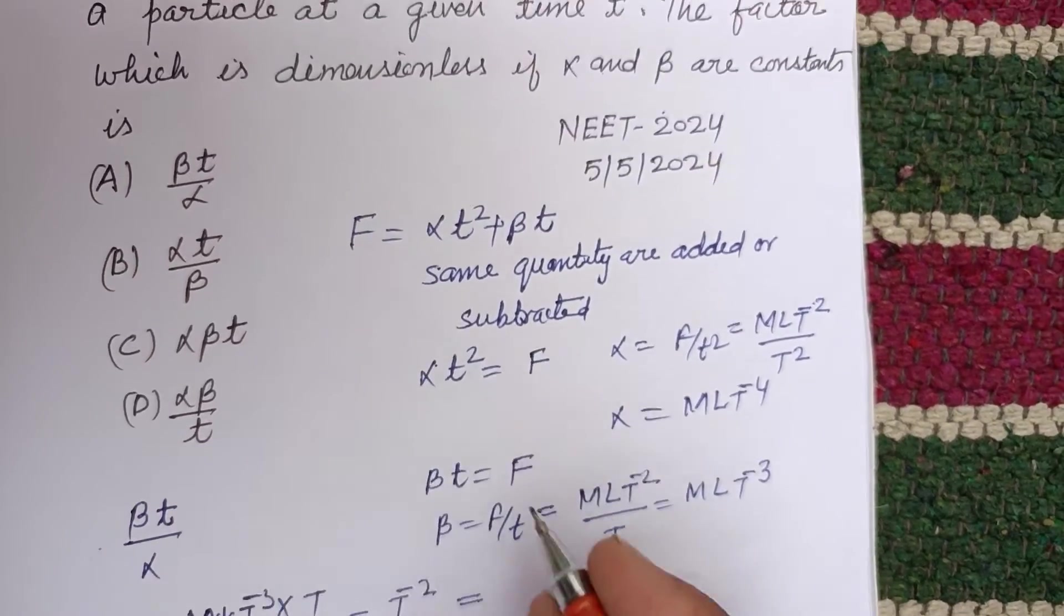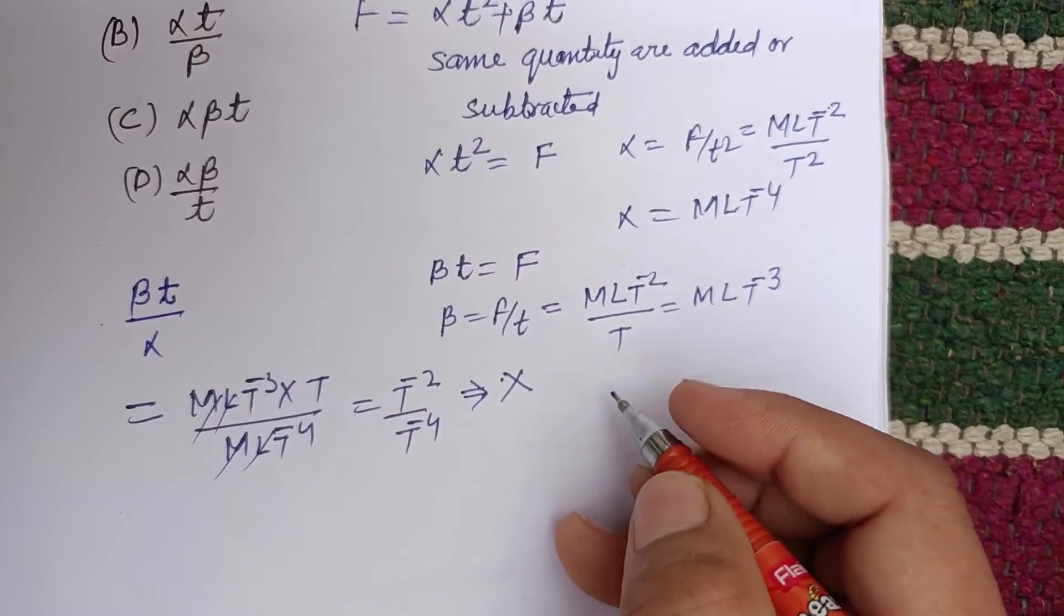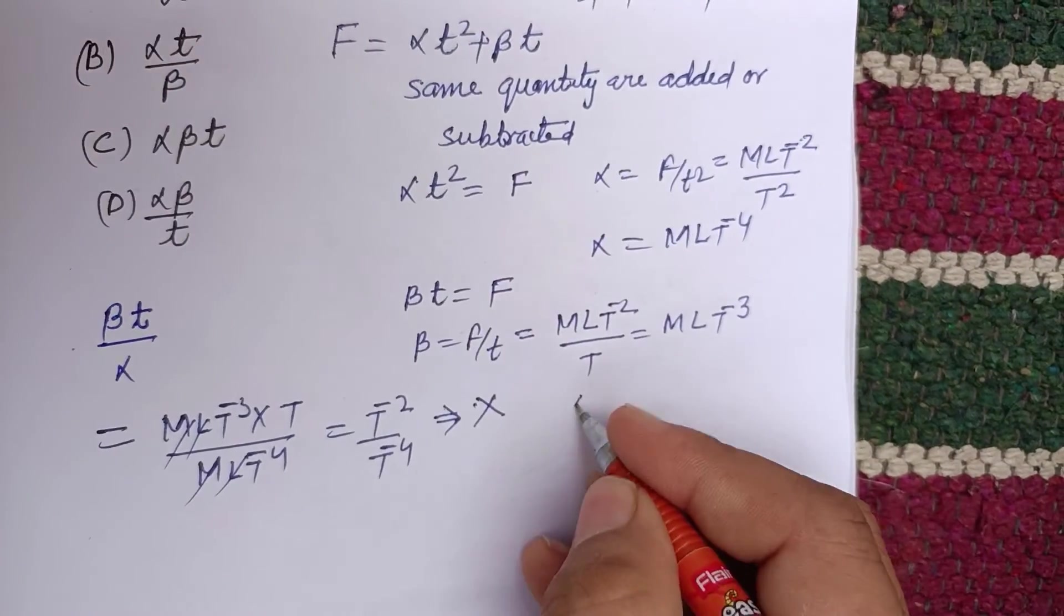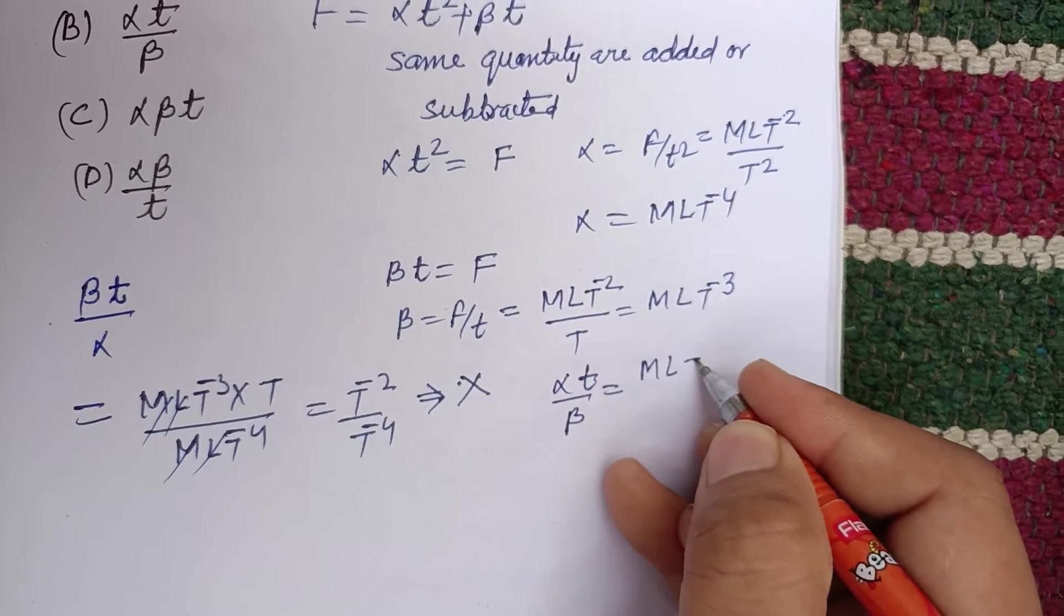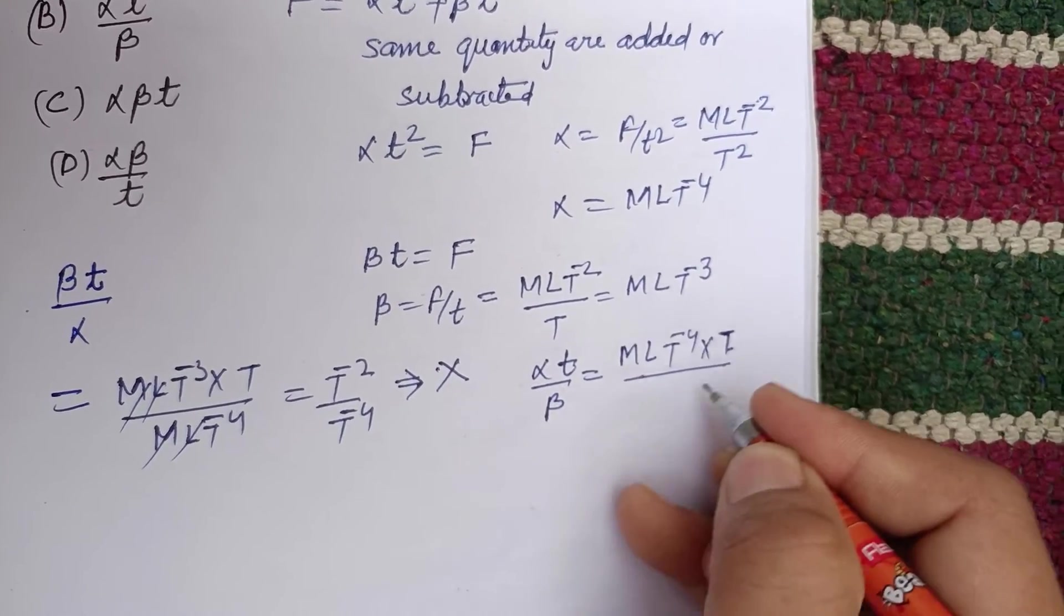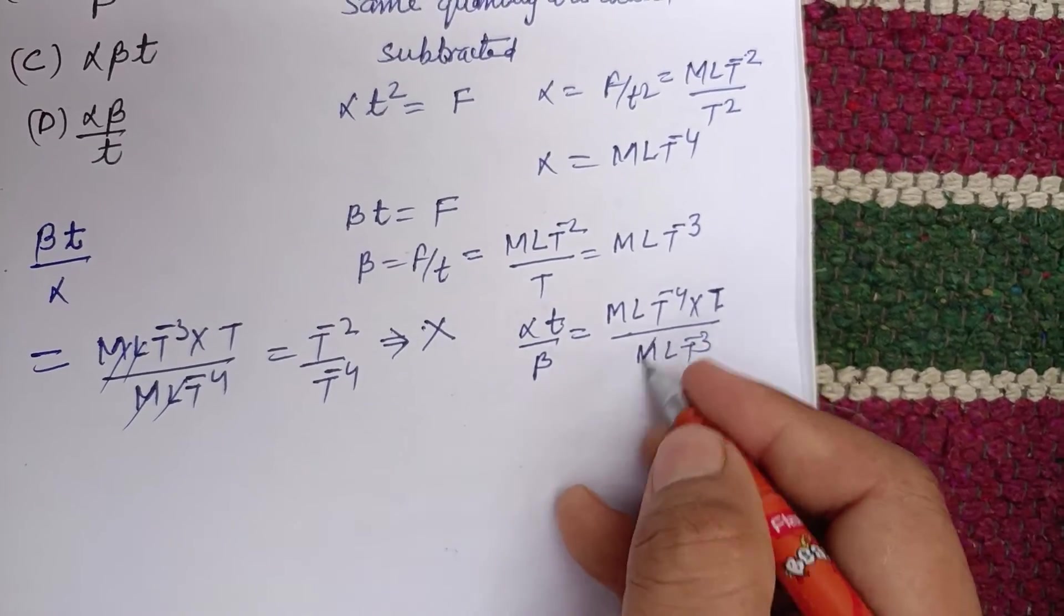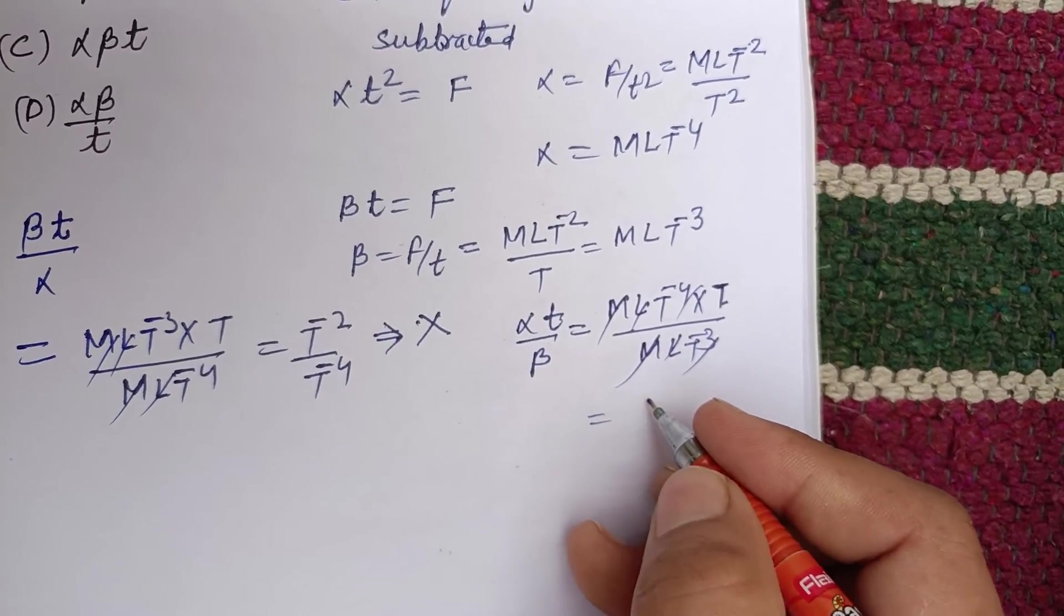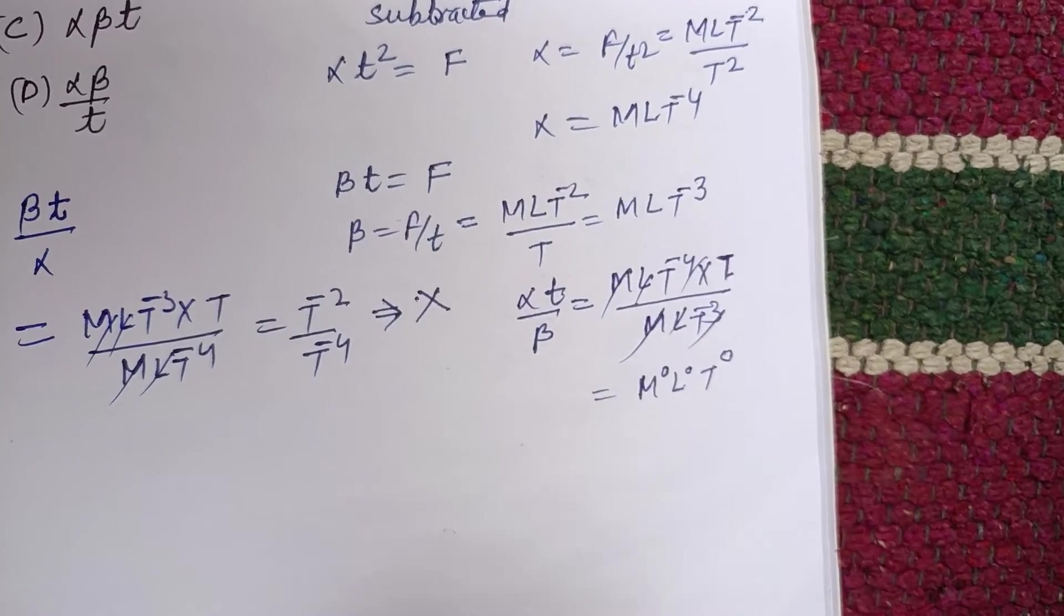Now we check alpha t upon beta. Alpha is MLT minus 4 into t upon beta is MLT minus 3. So ml ml cancel, and this is t minus 3 and this is dimensionless: m zero, l zero, t zero. Okay, so this is our correct answer.